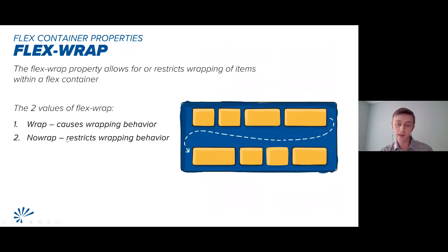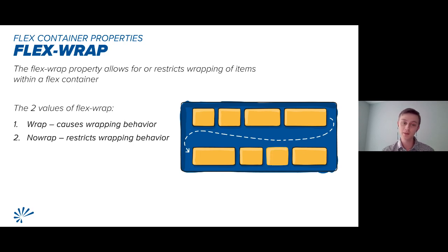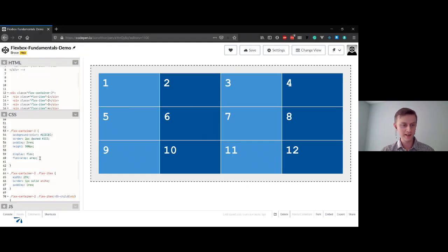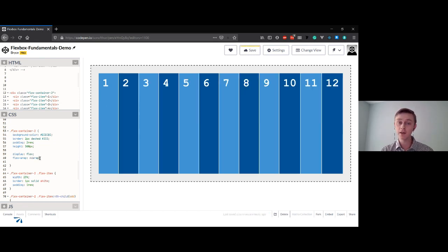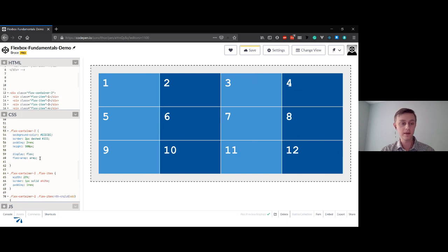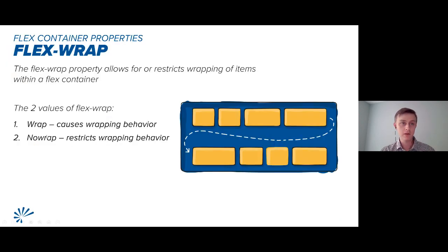The next property is flex-wrap, which allows or restricts wrapping of items within a flex container. There are two basic values: wrap (causes wrapping behavior) and no-wrap (restricts wrapping — its default value). If we change to no-wrap, the items are all squished into a single row because we've told Flexbox we don't want the content to wrap. You'll have to explicitly specify wrap if you want content to wrap.